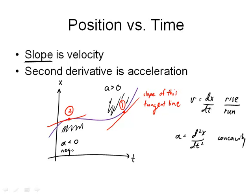Negative acceleration where it's concave down. Positive acceleration where it's concave up. So position versus time graph will tell us where we are. It will tell us the velocity by looking at the slope. And it will give us the sign of the acceleration by looking at whether or not it's concave up or concave down.